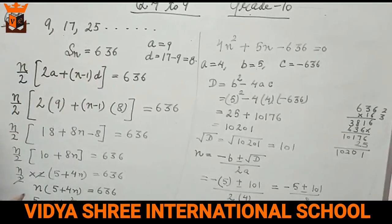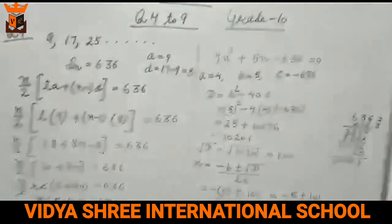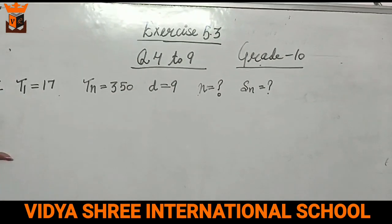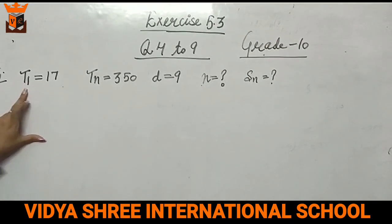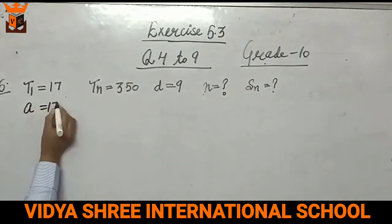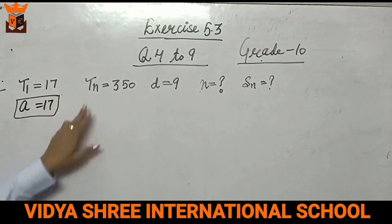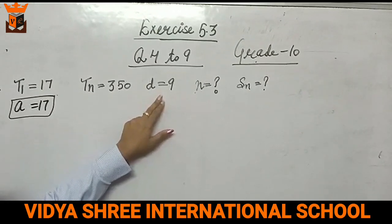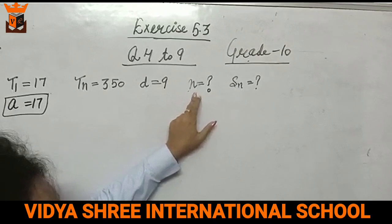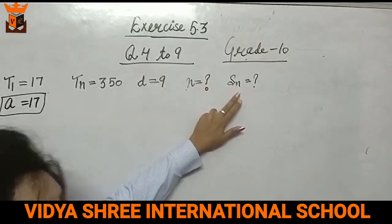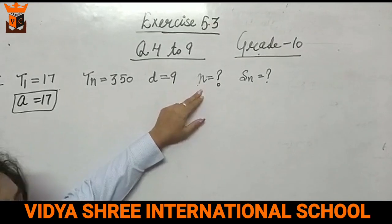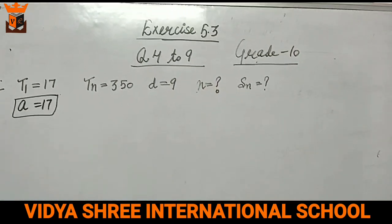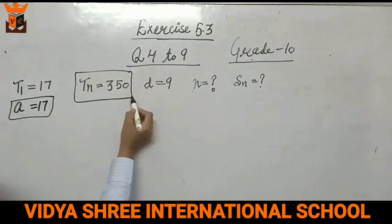We will discuss now the next question. This is question number 6. The first term is 17. First term you can write as d1 or you can write as a. Last term, this is tn, is given 350. Common difference is given 9. What do you have to find? One is n, number of terms, and then the sum. So first we will find how many terms are in the series.